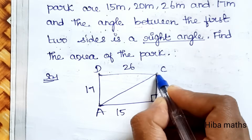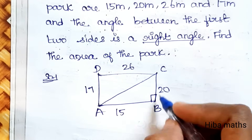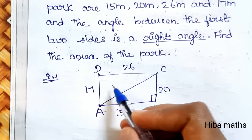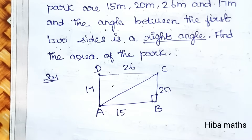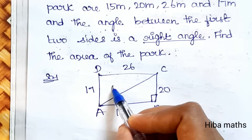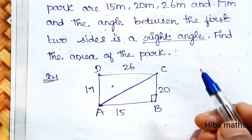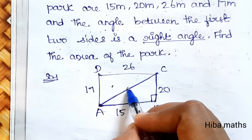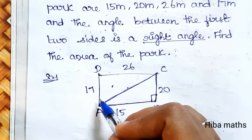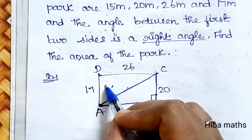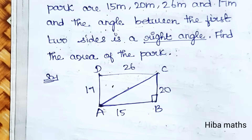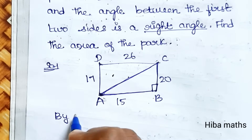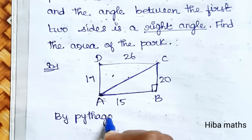If we join a diagonal, the quadrilateral is divided into two triangles. Triangle ABC is a right angle triangle, so its area is easy — half into base into height. We can find the AC value using Pythagoras theorem. Then for triangle ADC, we will use Heron's formula.